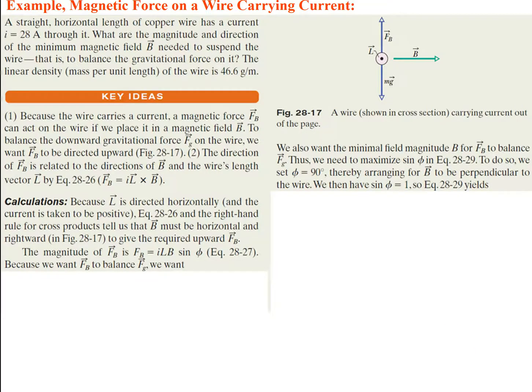Let's do an example problem. A straight horizontal length of copper wire has a current I equal to 28 amps through it. What are the magnitude and direction of the minimum magnetic field B needed to suspend the wire — that is, to balance the gravitational force on it? They give us the linear density, so we don't need the length or mass separately. Because the wire carries a current, the magnetic force can act on the wire if we place it in a magnetic field B.